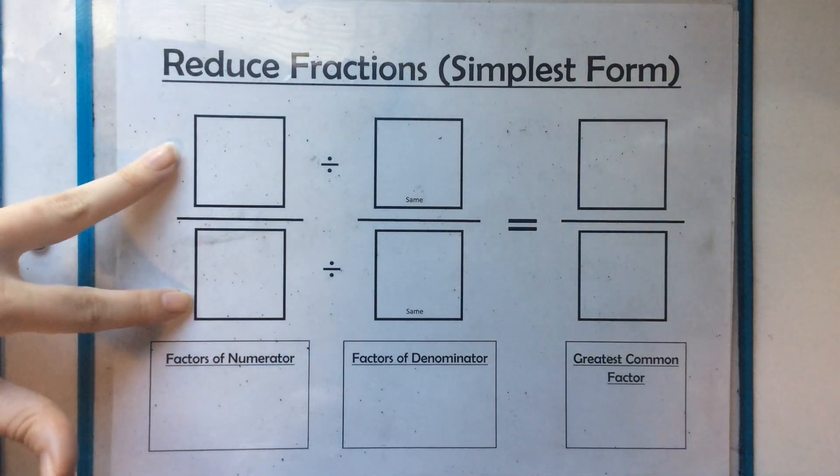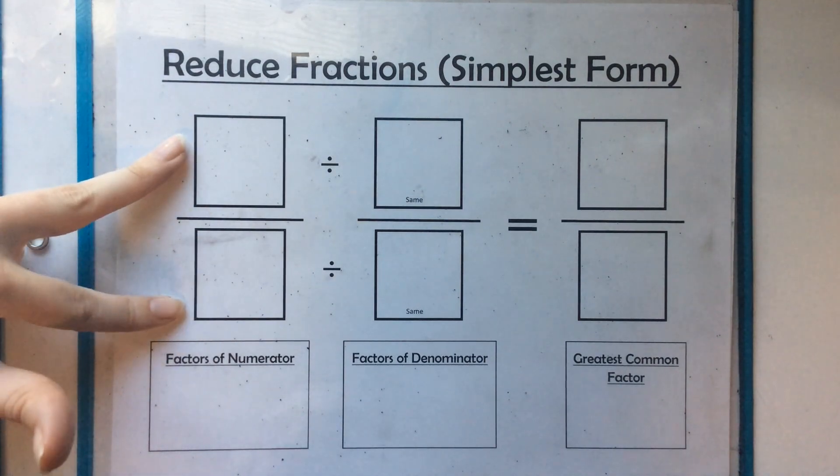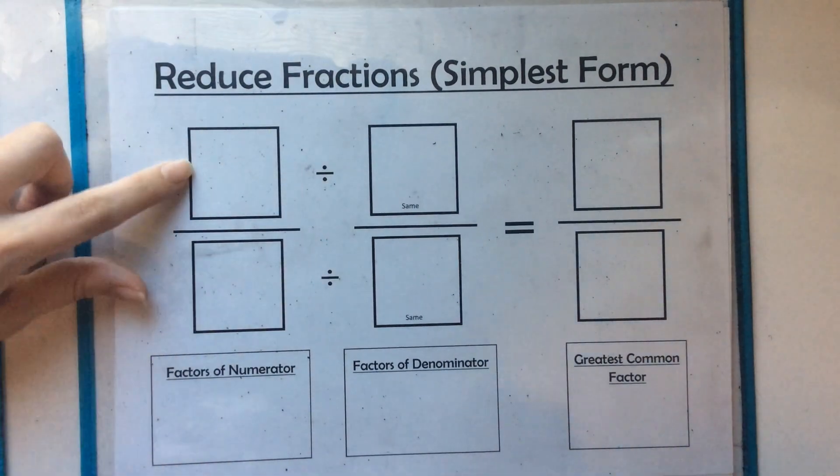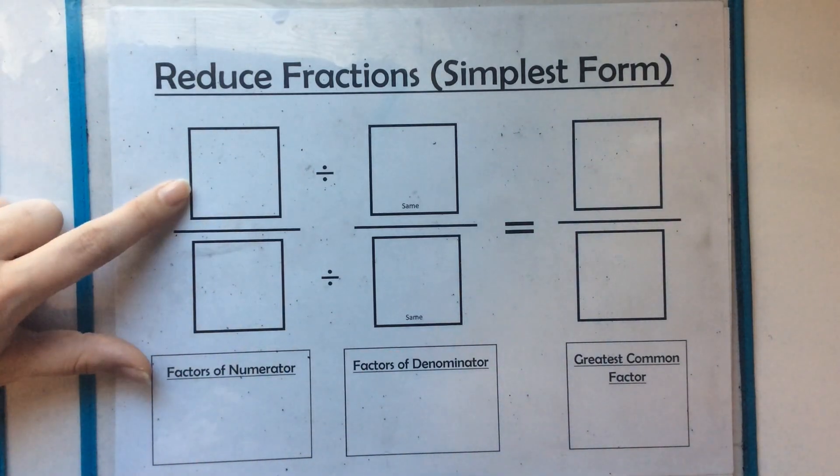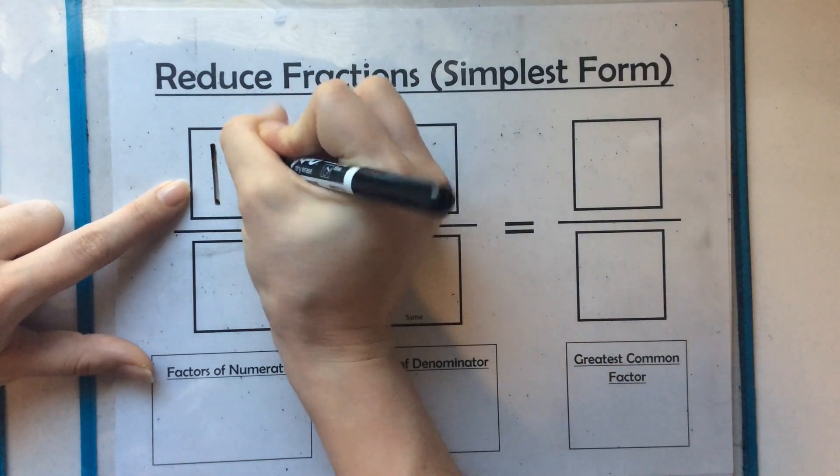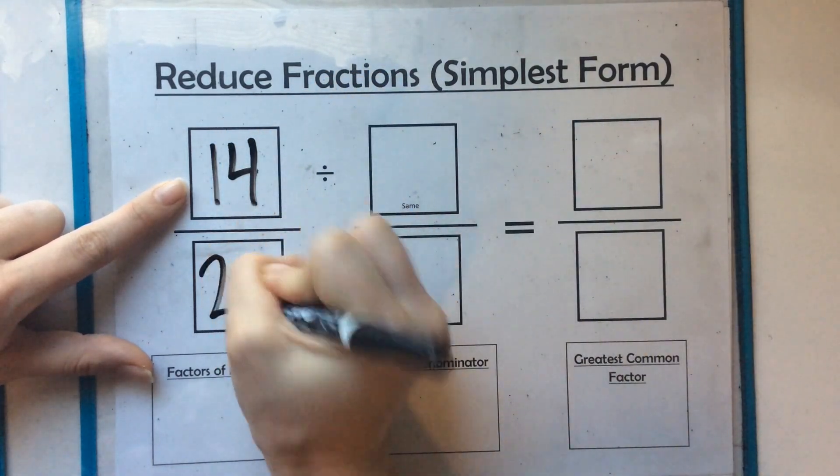So I have two boxes here for our first fraction. This is our numerator, this one is our denominator. So in the numerator, let's do 14 twentieths.